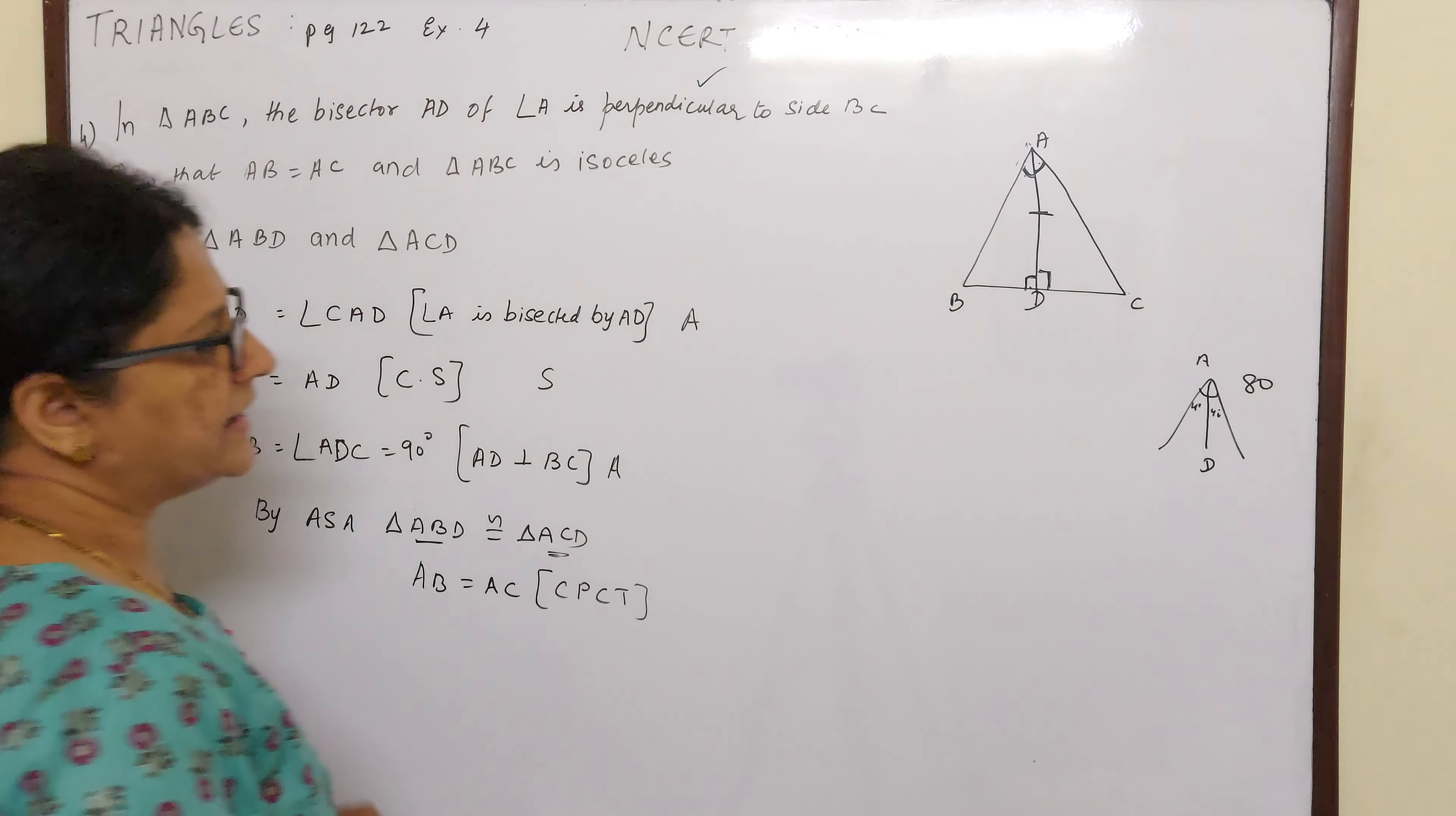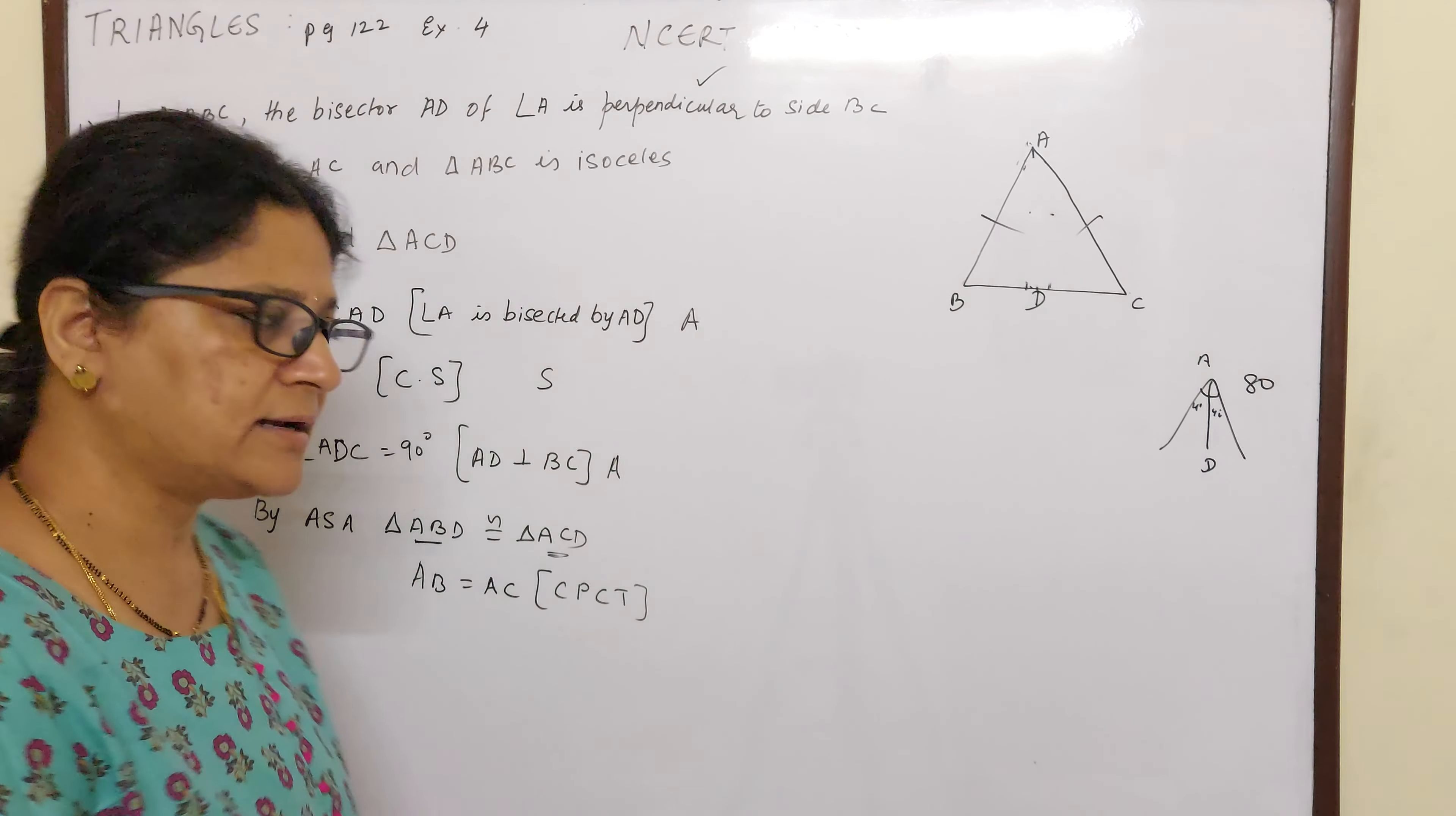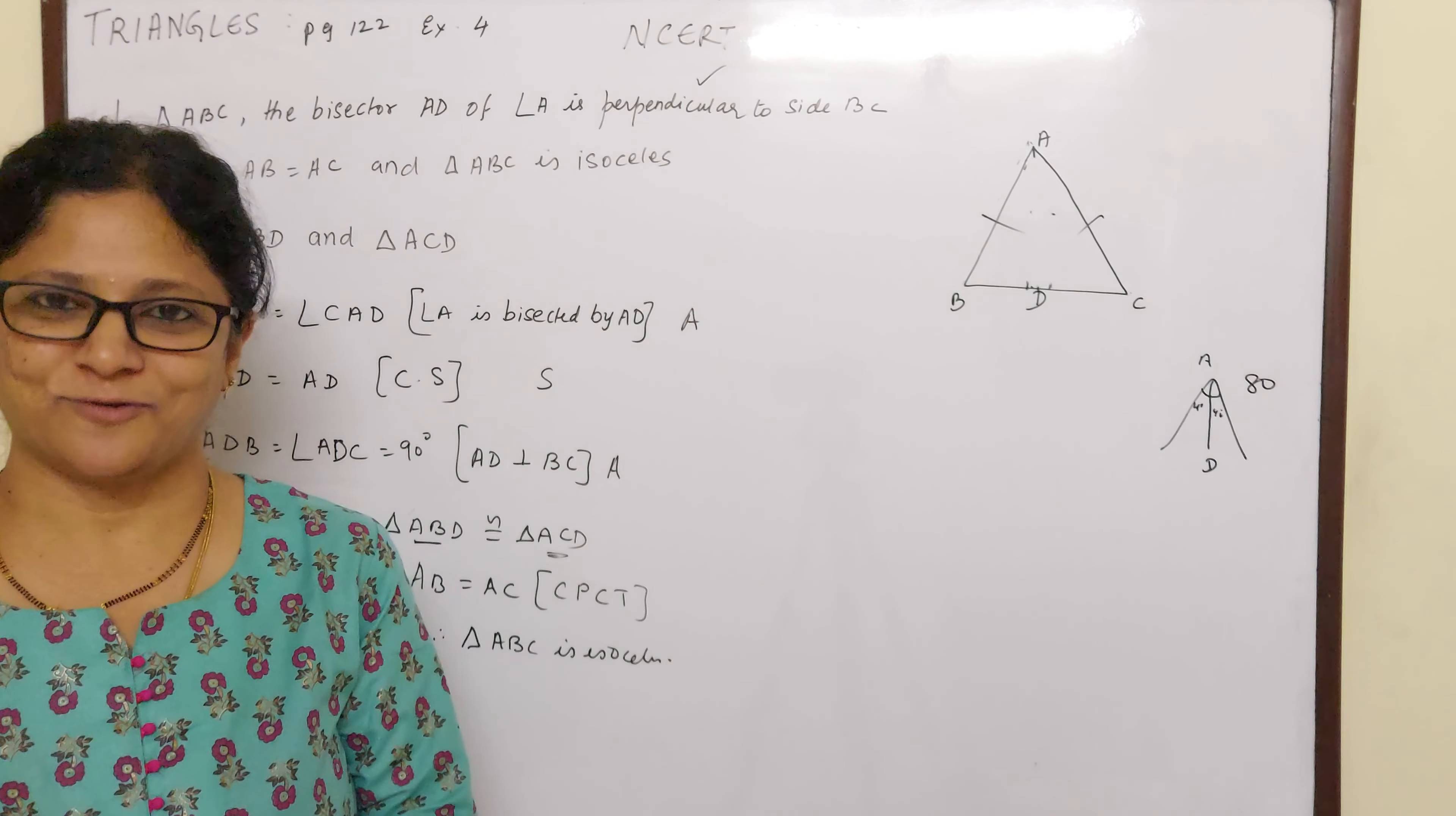Now if AB is equal to AC, now just see here, if AB is equal to AC, so in triangle ABC, if two sides are equal, then it is an isosceles triangle. And therefore we can say triangle ABC is isosceles. This was very easy for me.